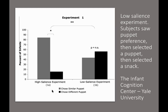What was very interesting is that they also conducted a second experiment. In the second experiment, the children first saw the puppet preference, then selected which puppet they wanted to play with, and then selected their snack. In that experiment, there was no significant difference between whether they had chosen a puppet that agreed with their future preference or not. There are all kinds of really interesting studies like this being done at the Infant Cognition Center at Yale University.